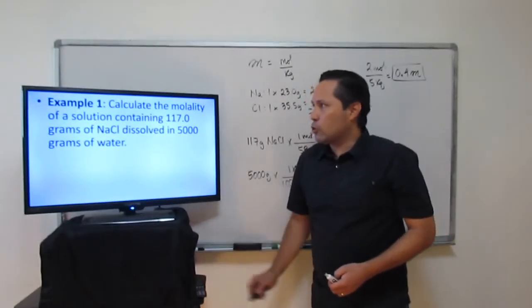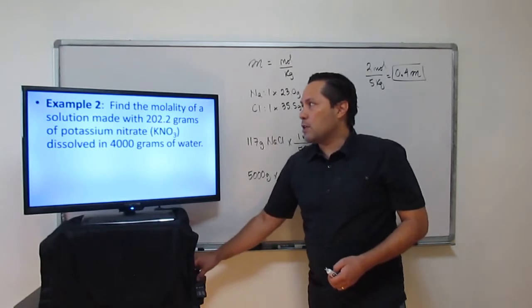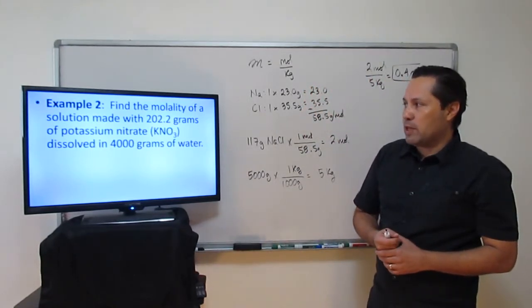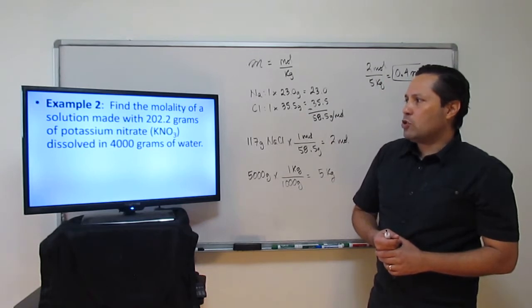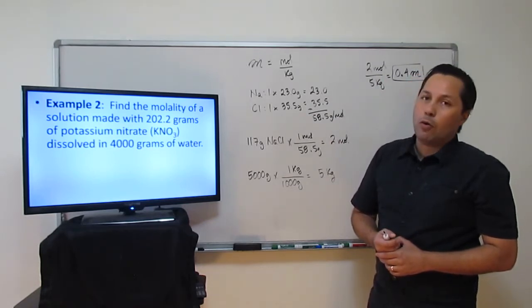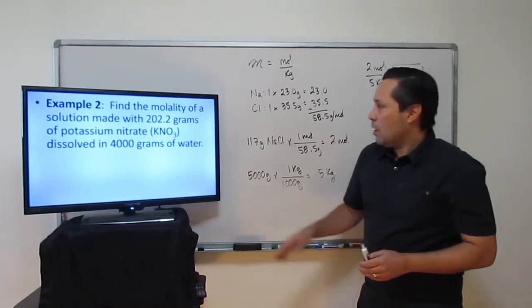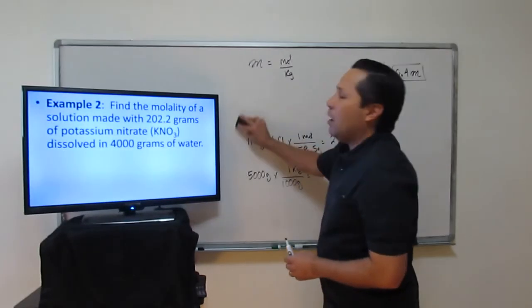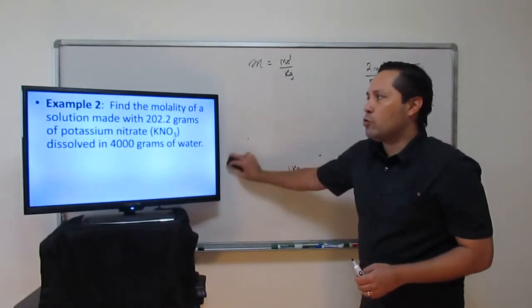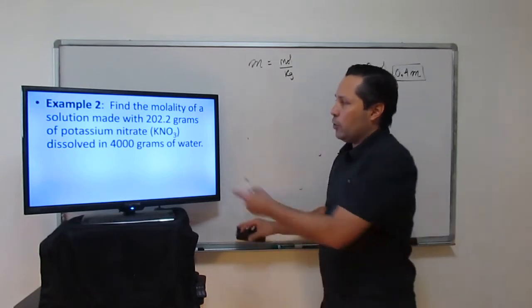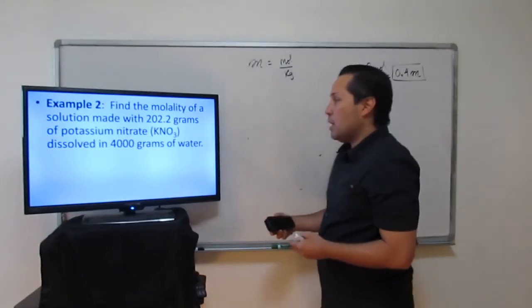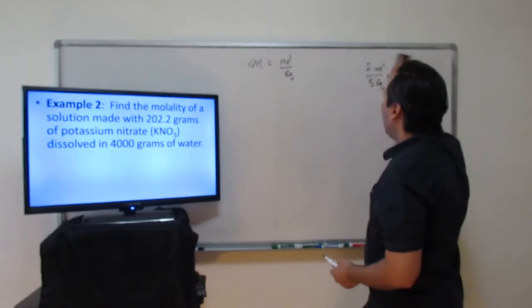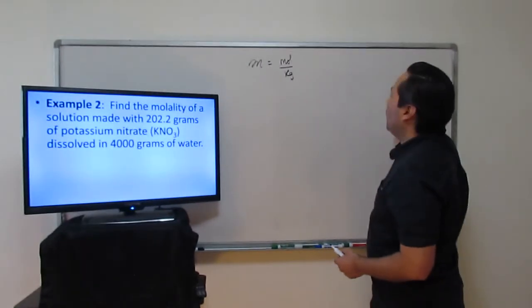In example 2 we're asked the molality of a solution made from 202 grams of potassium nitrate dissolved in 4,000 grams of water. Very similar problem — we're going to start by changing our grams to moles for the solute, and convert the 4,000 grams of water (our solvent) to kilograms. But before we can work with the 202 grams of potassium nitrate (KNO3), we first need to find the molar mass of potassium nitrate.